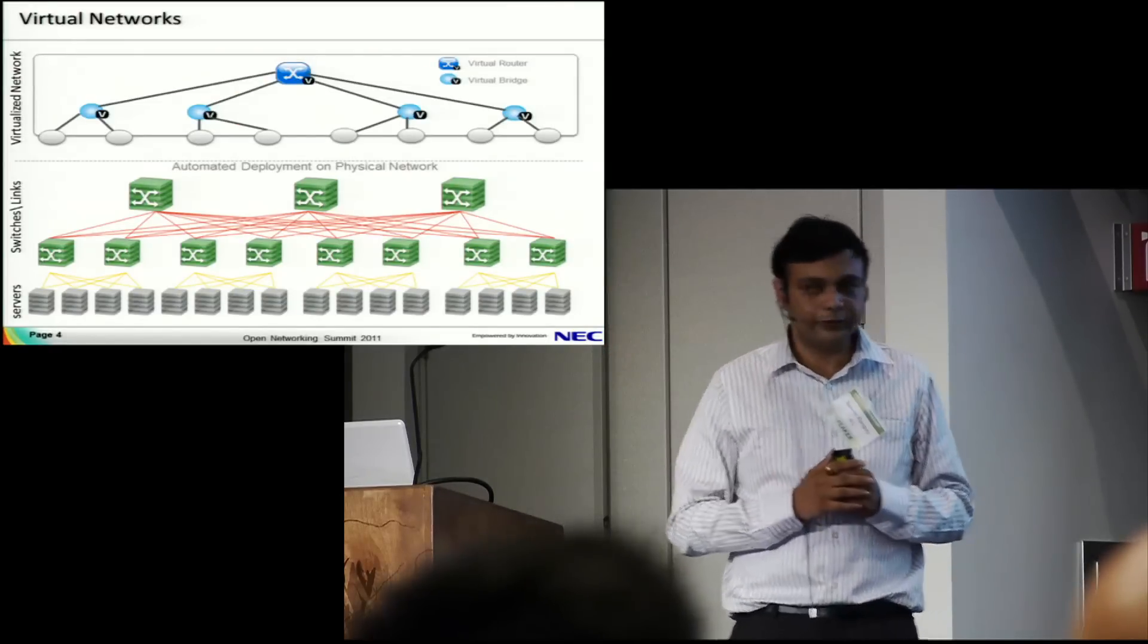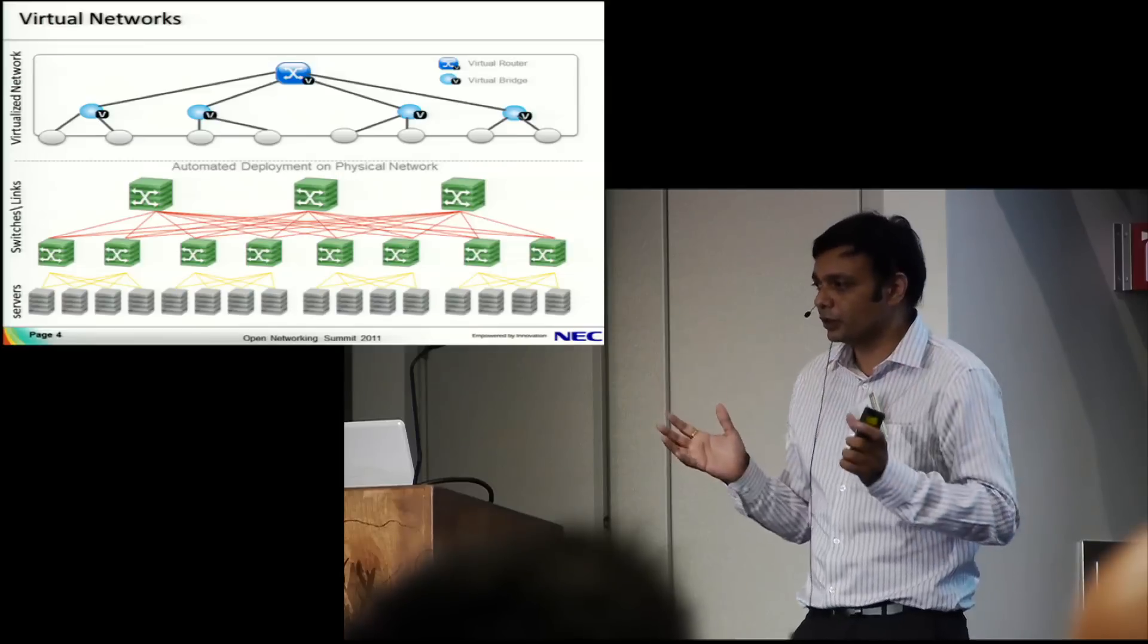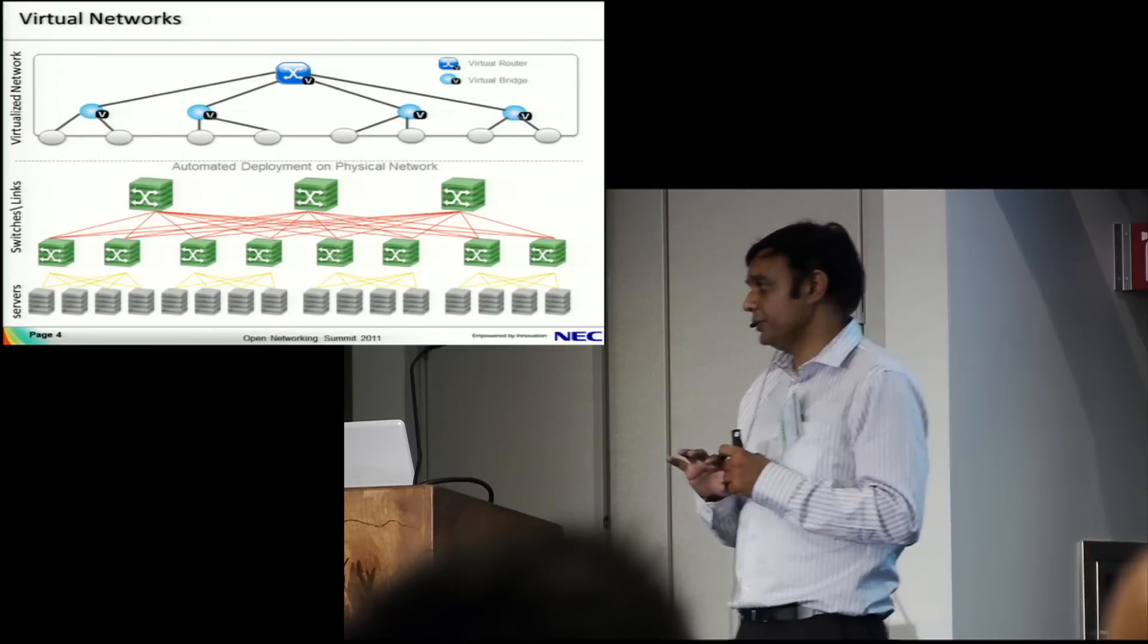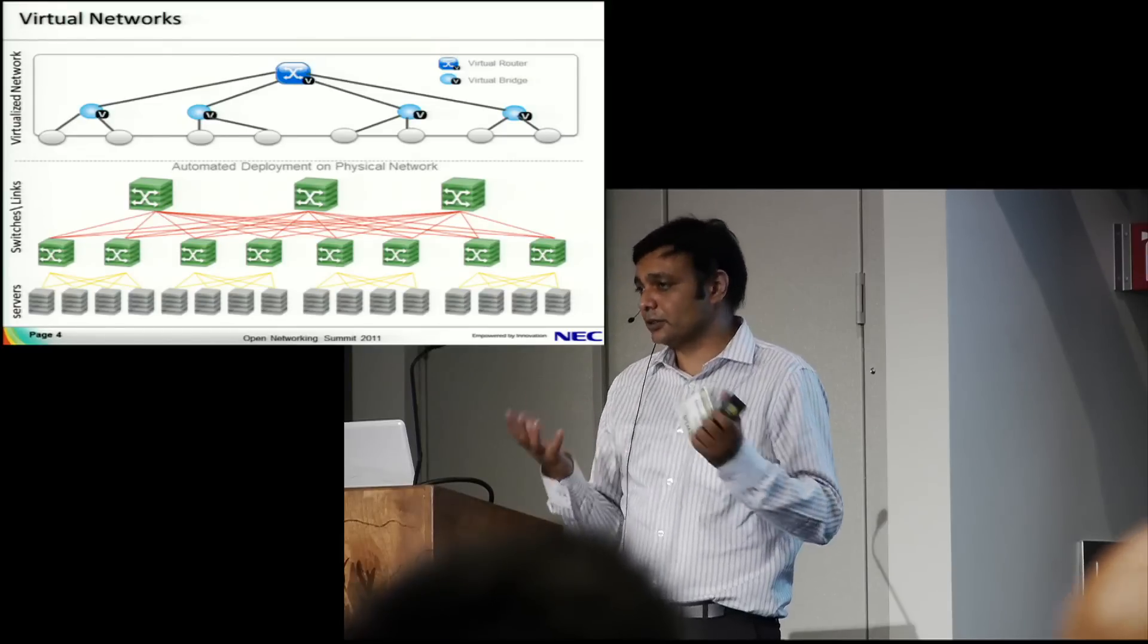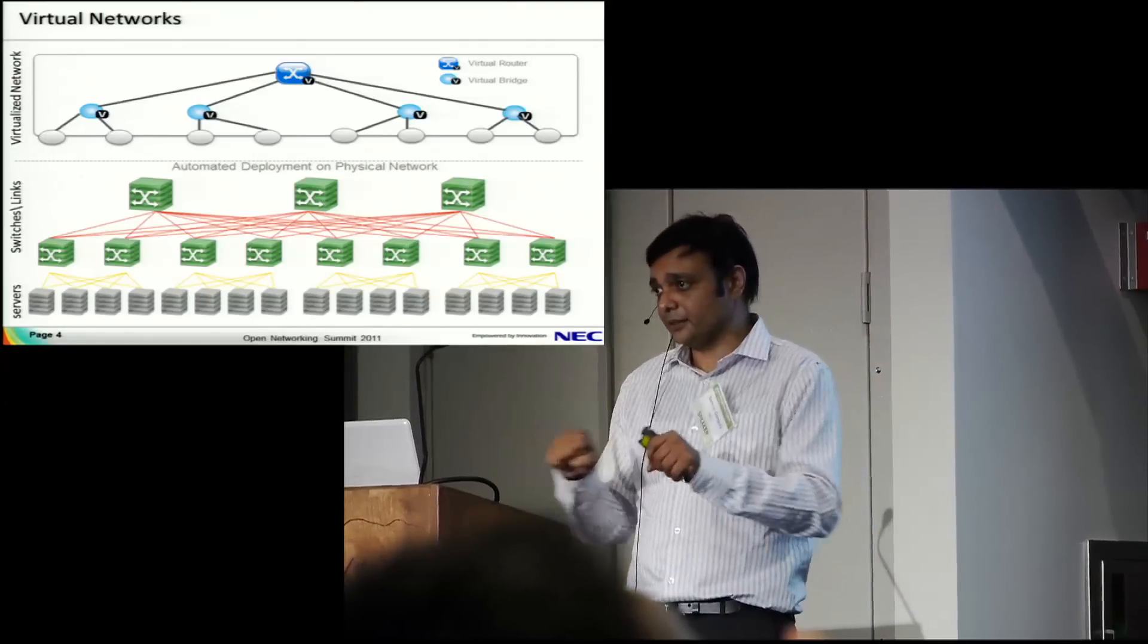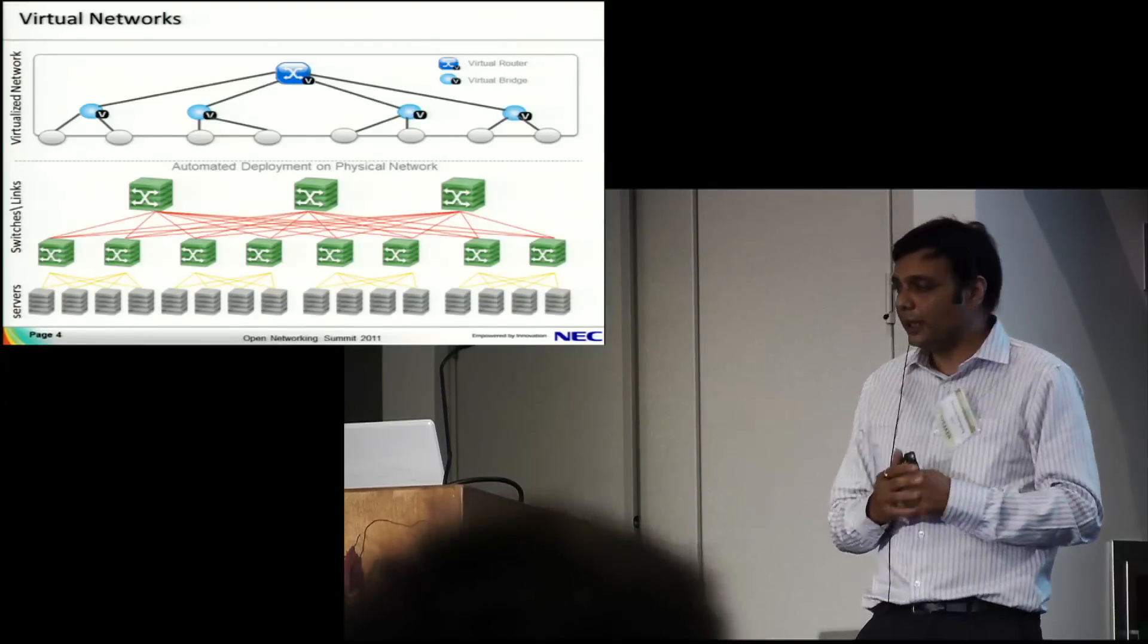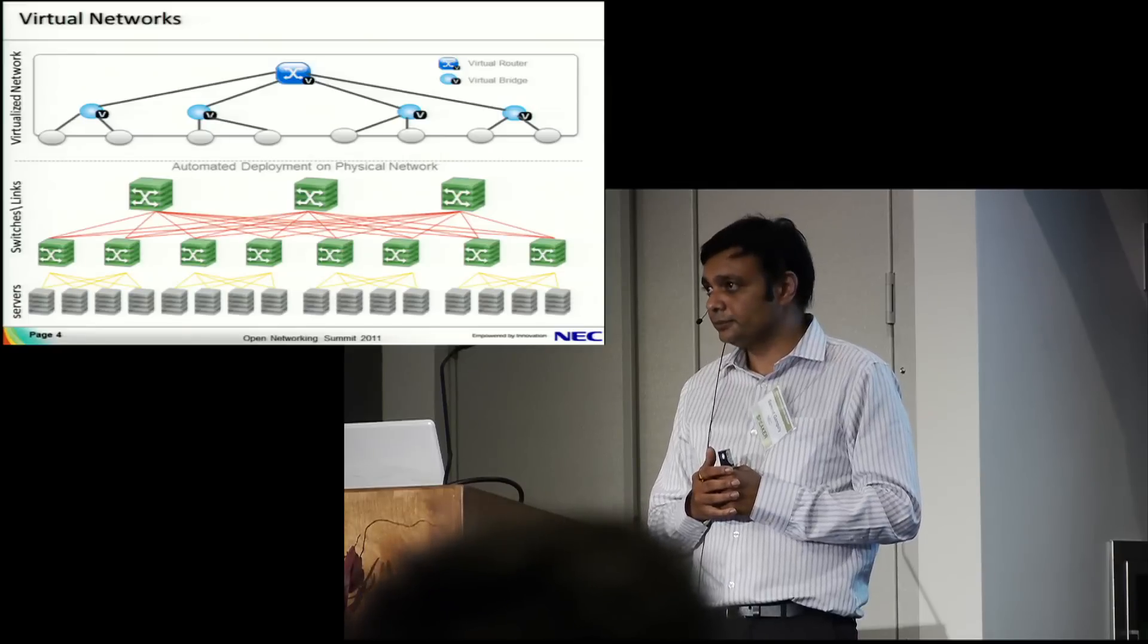Once you take out the coupling, you have separable resources you can combine as you want. You have the opportunity to define end-to-end network virtualization. You can create a virtual network where you define virtual bridges, virtual routers, and externals and links without even knowing what the underlying physical network is.